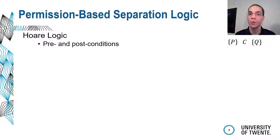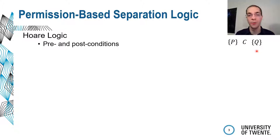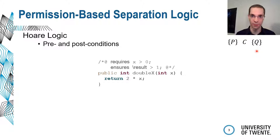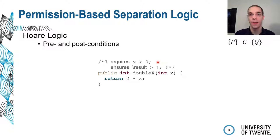Let's start with the logic: permission-based separation logic. This is an extension of Hoare logic. As a brief recap, we have triples of a program C, some preconditions P and some post-conditions Q, and we verify that if the preconditions P hold before the program executes, then the post-conditions hold after the program terminates. Here is an example using Java and JML, the Java Modeling Language, as the verification language. We see a precondition that the input is larger than zero, the program doubles this value, and we verify that the result is larger than one.